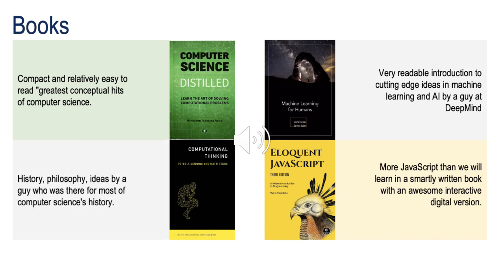Finally, Peter Denning's book Computational Thinking just came out last year. It's more of a history and philosophy book that runs through the ideas associated with computational reasoning, delves into their history, and tells the story of how computational thinking has developed and evolved — not just over the last 50 years, but really over the last many hundreds of years. Again, it's a nice short readable book that will be a nice supplement to the others.